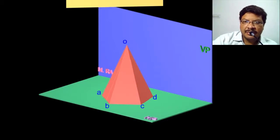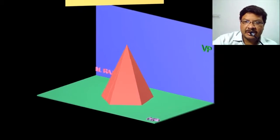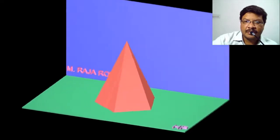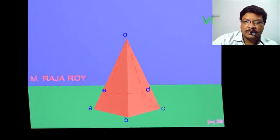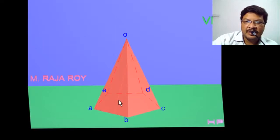Now observe how the section plane is being sent. This is the position of the solid — it is a pentagonal pyramid ABCDE. Corners A, B, C are visible and D, E are invisible, represented with dashed lines. This is the apex. Now I will cut the solid with the section plane which is perpendicular to HP and inclined to VP.